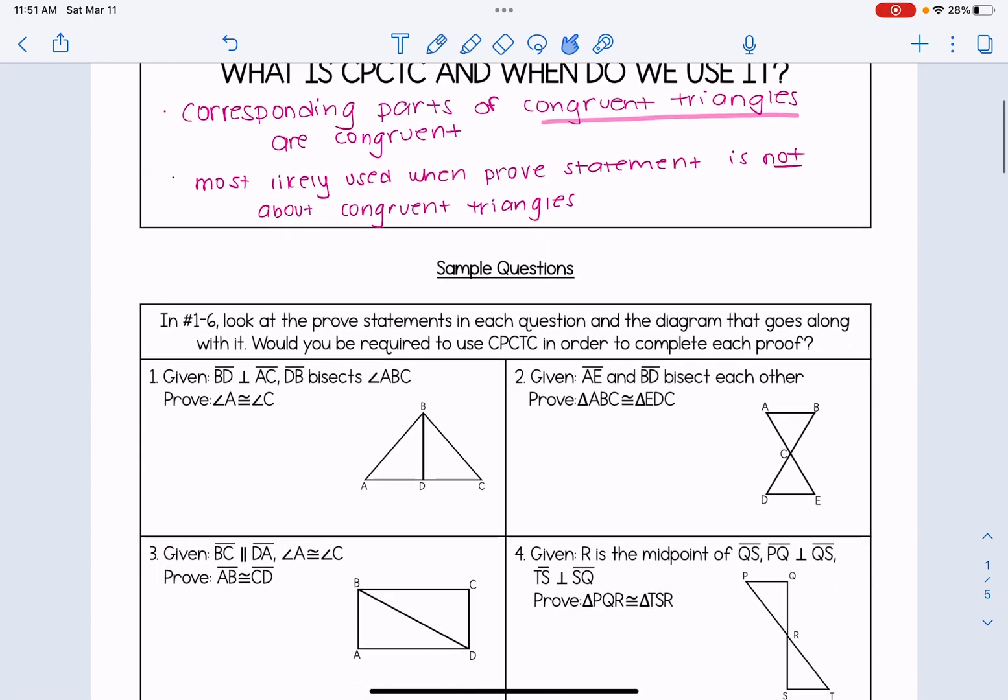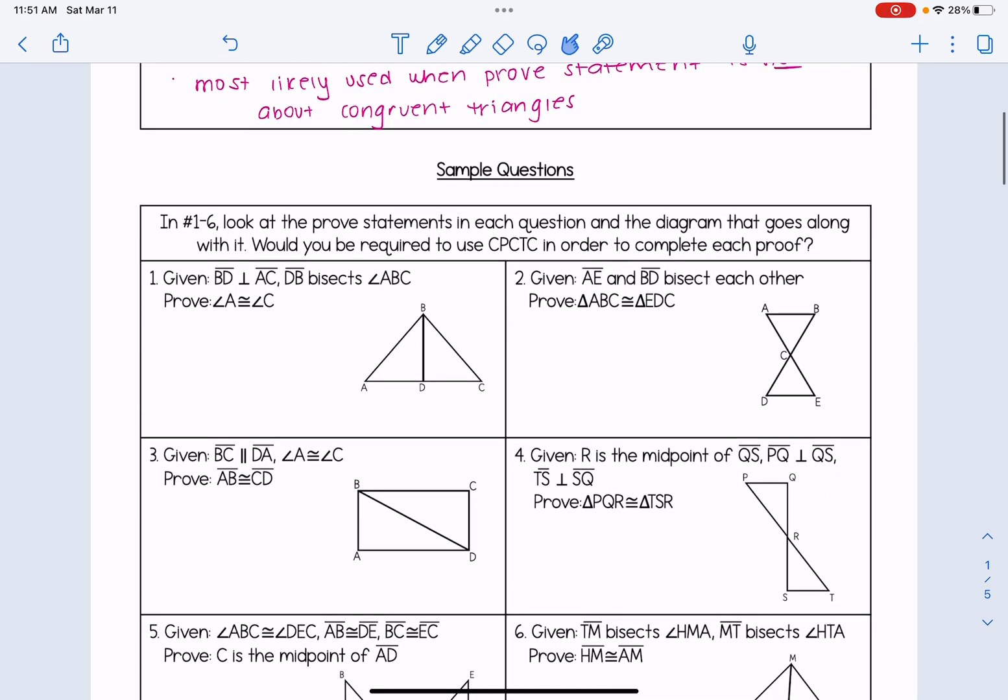So let's take a look at some basic proofs. And we're just going to see based on the proof statement if we would have to use CPCTC or not. And again, these are all relatively straightforward proofs. So they are going to follow that rule that if the proof statement is not about congruent triangles, that CPCTC would be used.